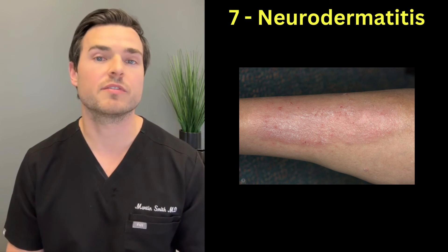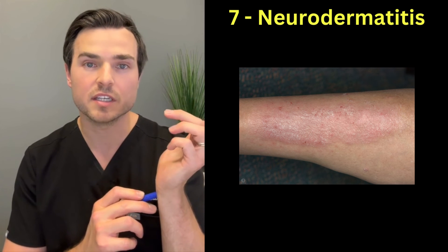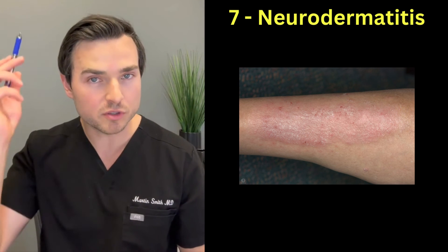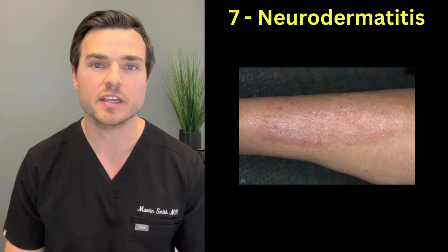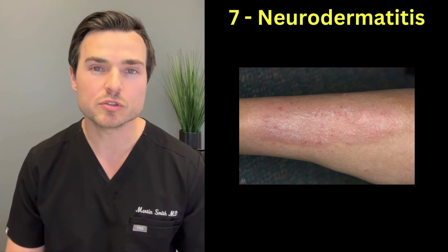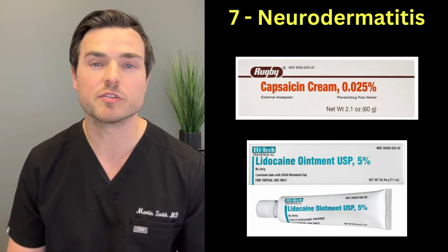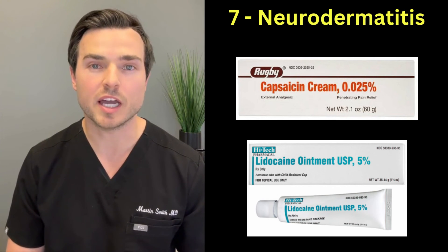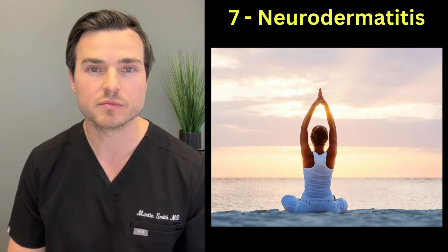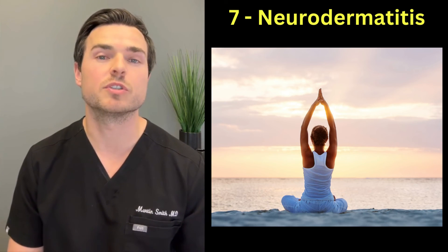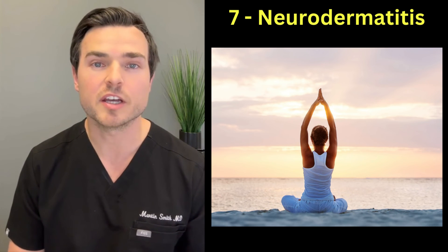The areas neurodermatitis likes to affect include the hands and wrists, the feet and ankles, the elbows and shoulders, and the scalp. Treatment focuses on decreasing the itch using topical treatments such as topical capsaicin — a pepper-derived cream — and topical lidocaine, which numbs the area and prevents itching. Relaxation techniques such as meditation and yoga have also been shown to be effective.